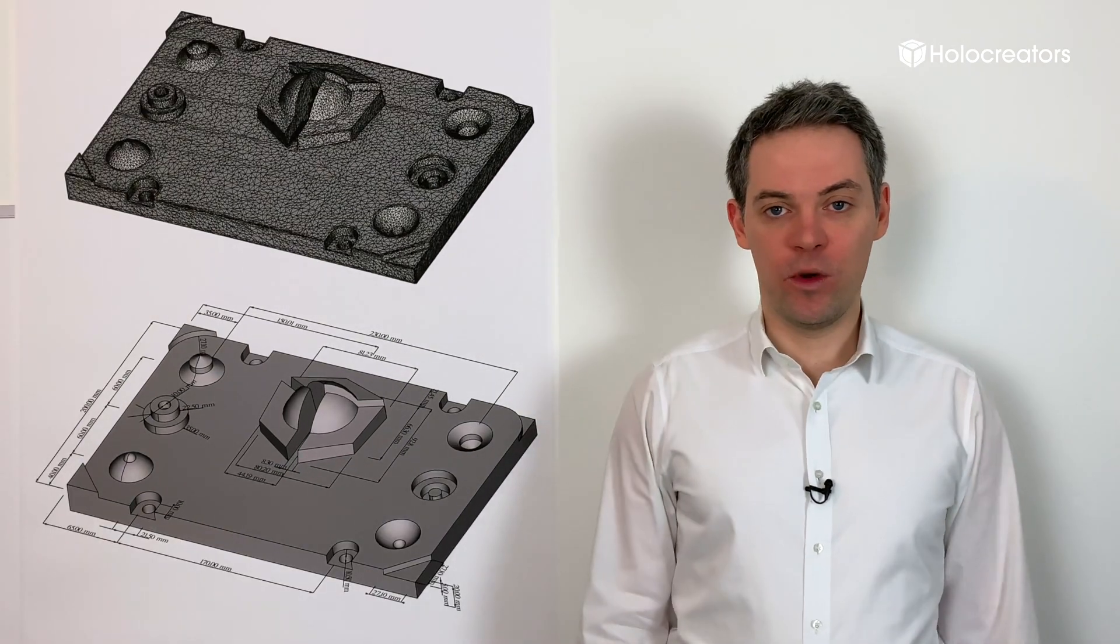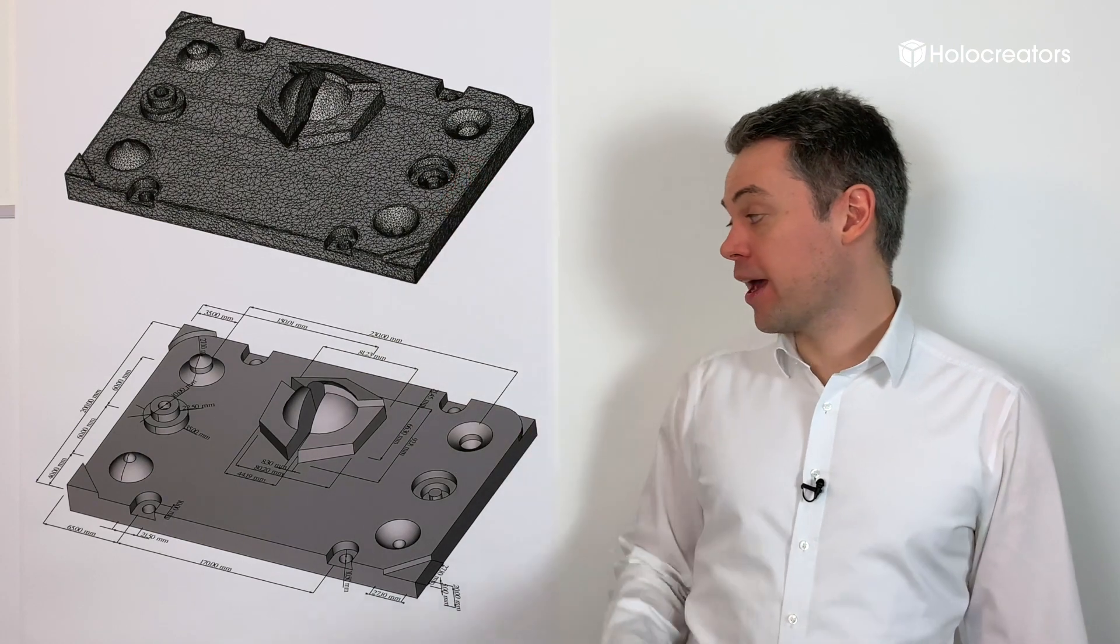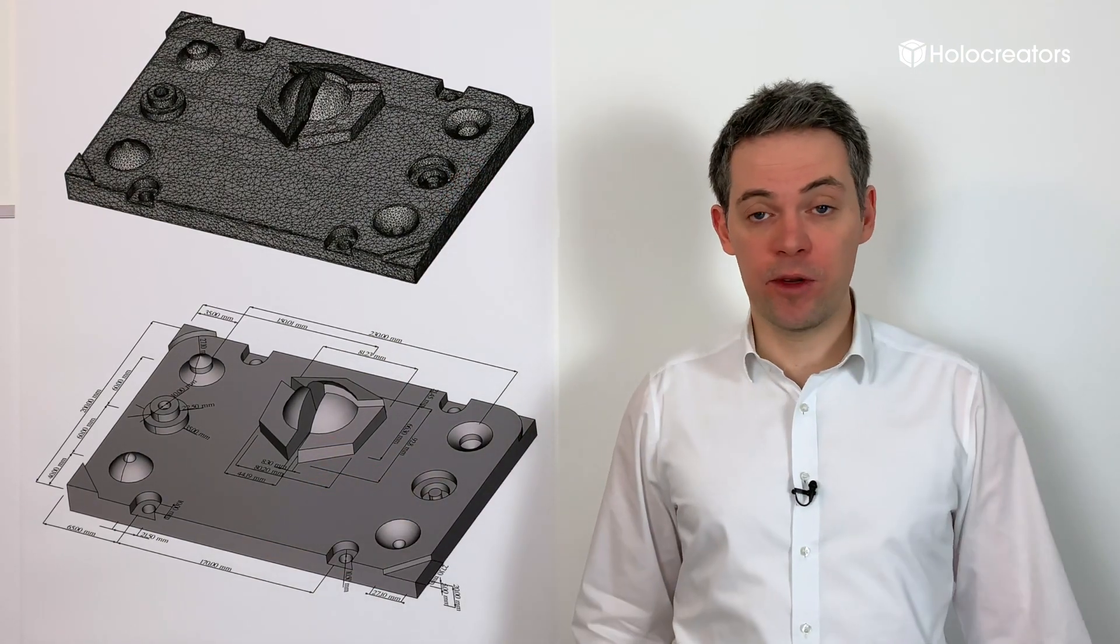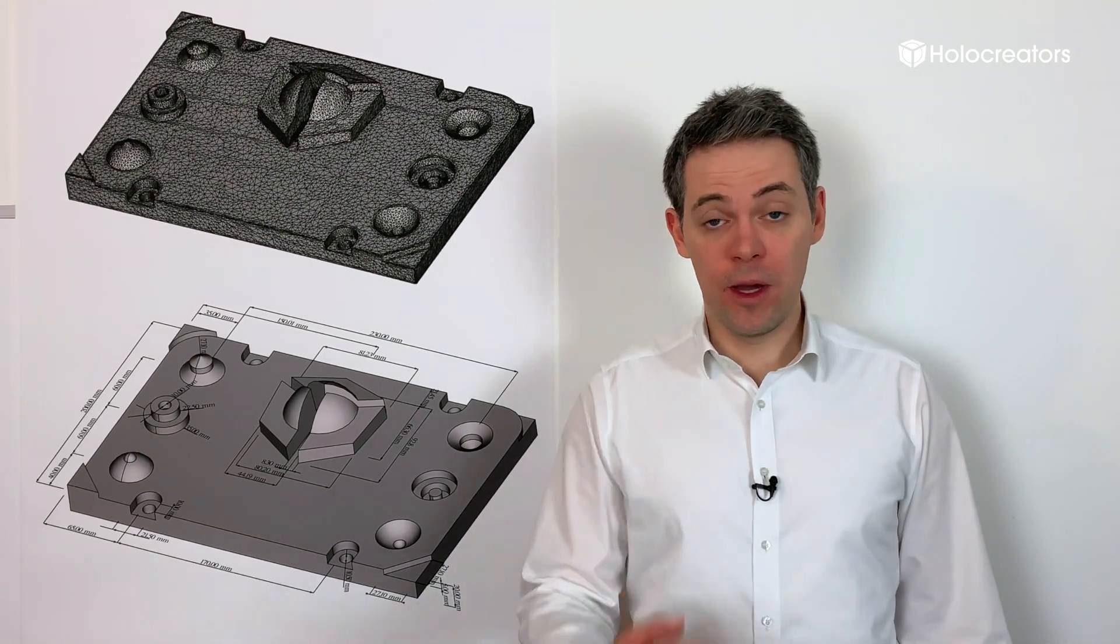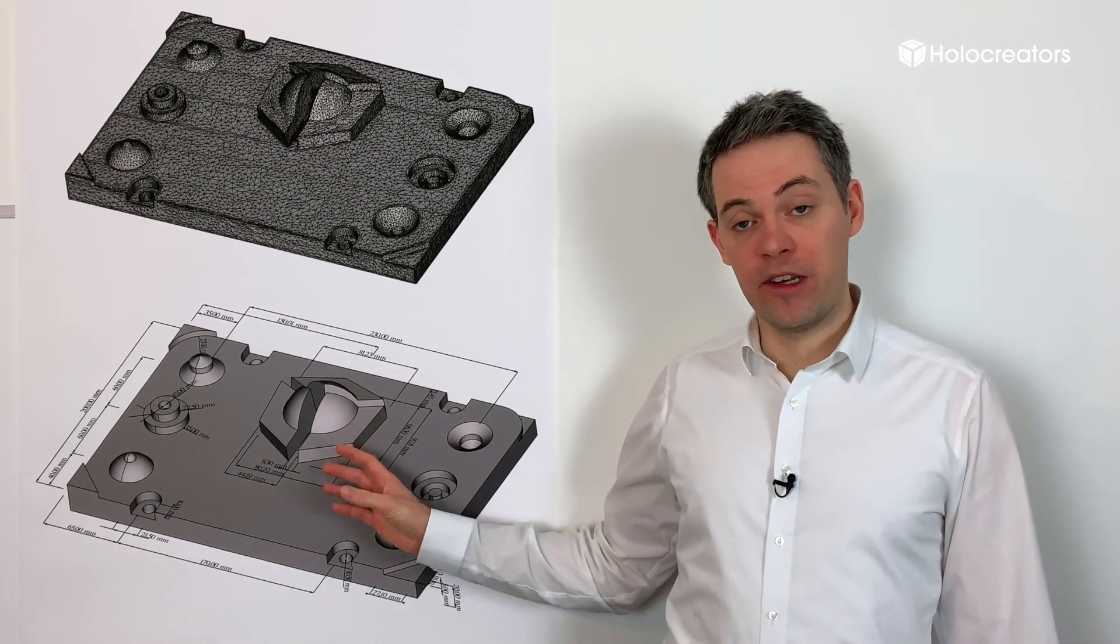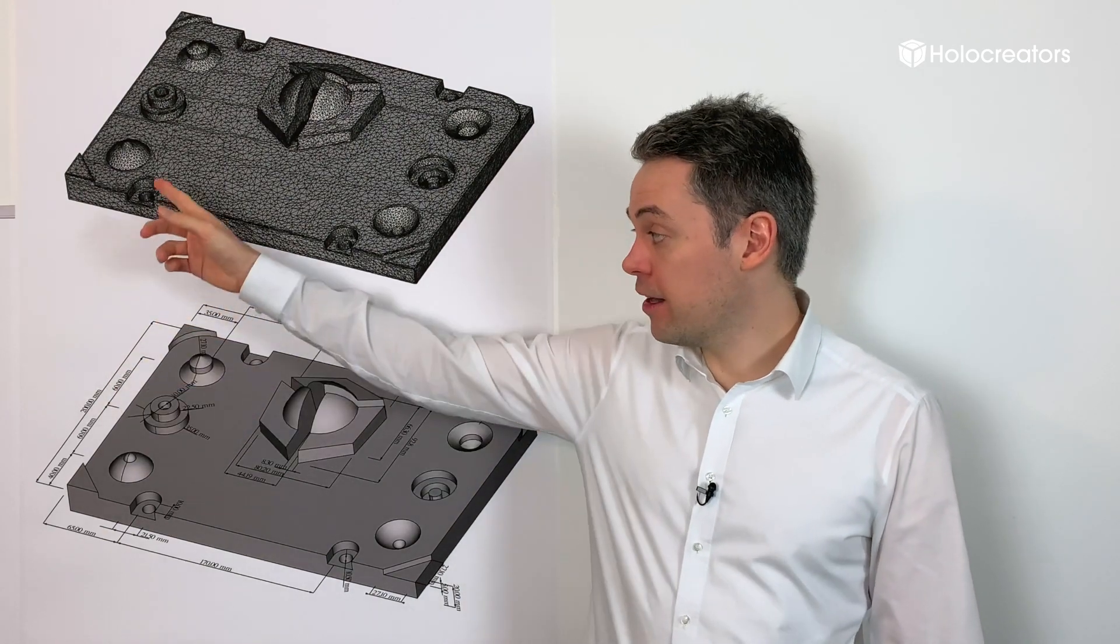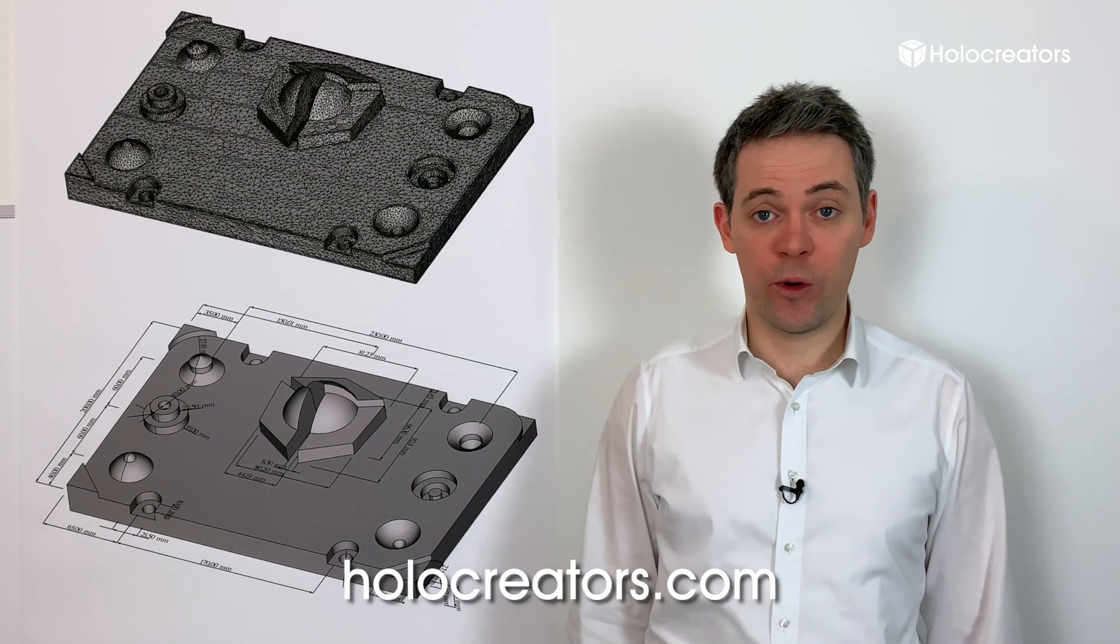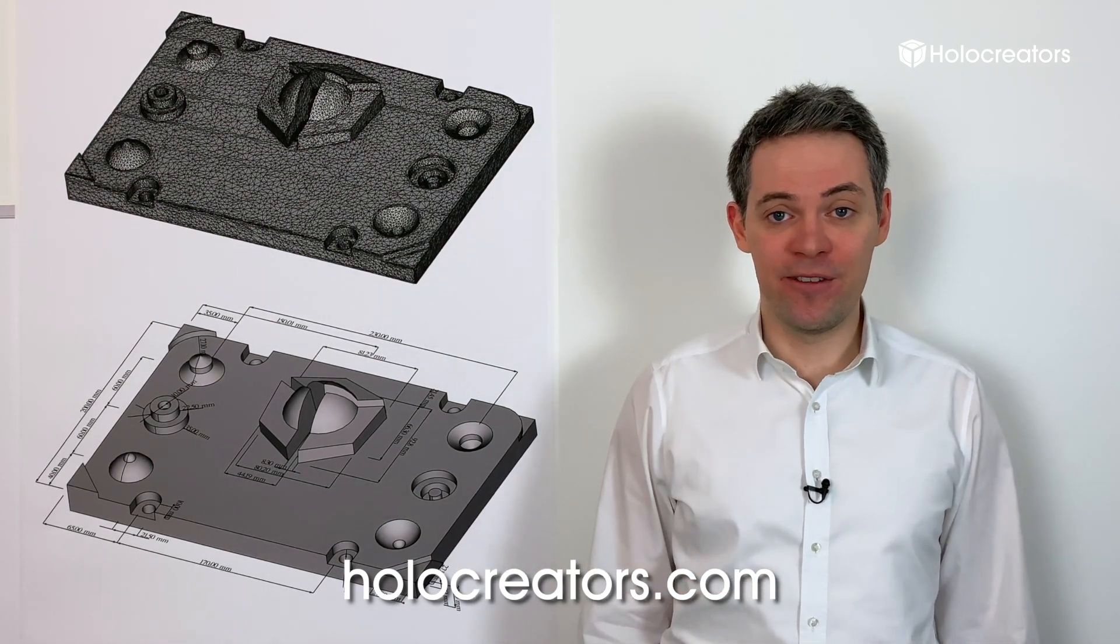All the sample data I will make available for you to download: the original 3D scan, the parametric model for FreeCAD, and the deviation report. By the way, FreeCAD is free software, so you might as well download that too, and then you're able to import our parametric model and modify the history tree. All the files I will put on our website holocreators.com, but I will also put the download links into the video description.